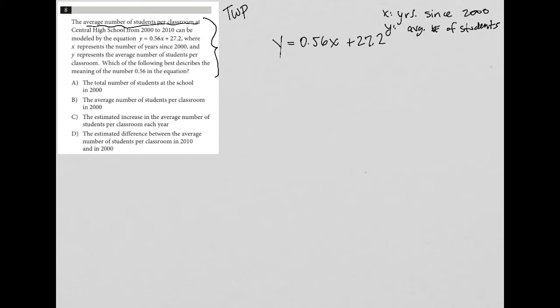Which of the following best describes the meaning of the number 0.56 in the equation? Well, 0.56 draws my attention to the structure of this equation, which is the structure of slope-intercept form, which is y equals mx plus b. In this case, m, or the slope, is the 0.56.